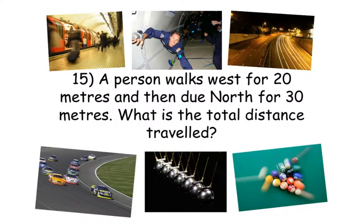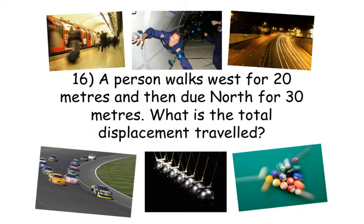Number 15. A person walks west for 20 m and then due north for 30 m. What is the total distance travelled? Number 16. A person walks west for 20 m and then due north for 30 m. What is the total displacement travelled?